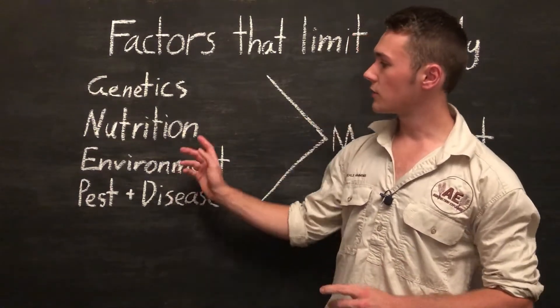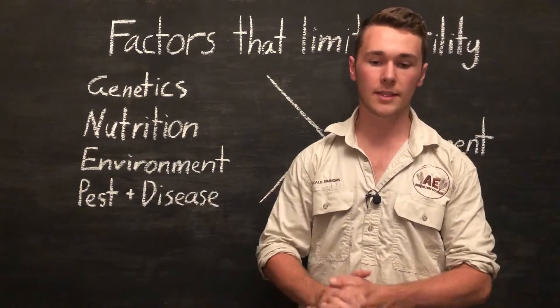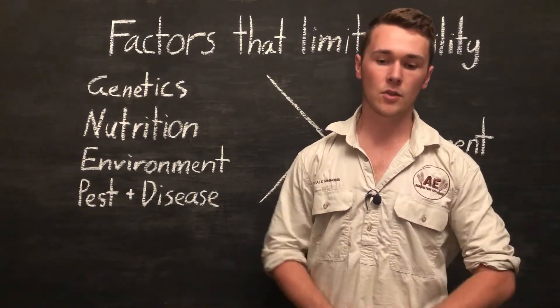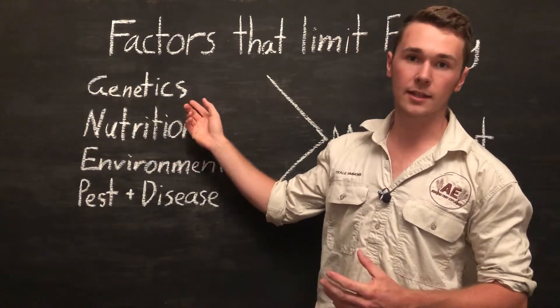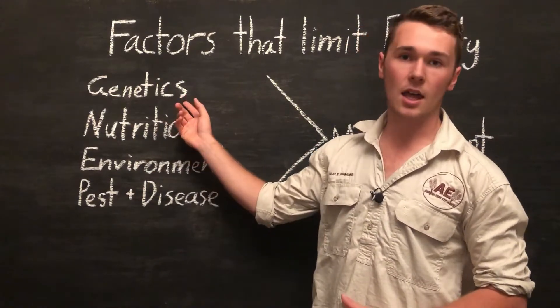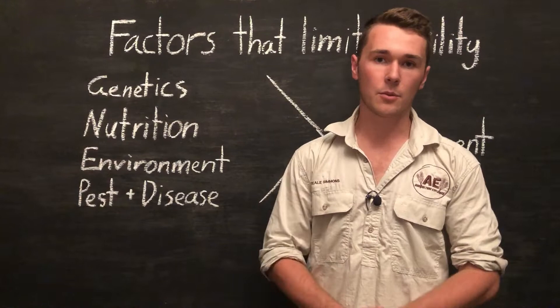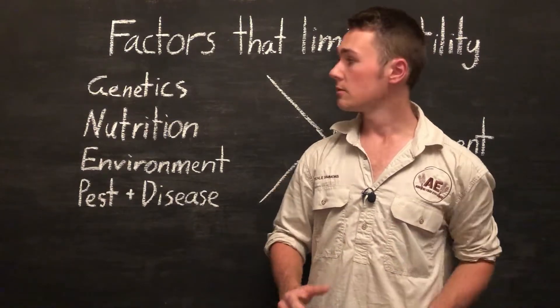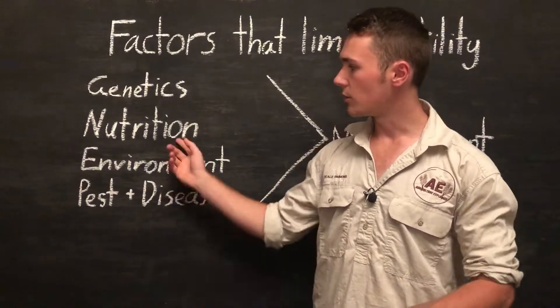So from there we should consider nutrition. Now nutrition plays a massive role in fertility. Essentially poor nutrition leads to poor fertility. And that might have nothing to do with the genetics of the animal, but everything to do with how these genetics are expressed. Because remember our phenotype or the expressions that we make are a function or a result of our genetics and our environment, which includes our nutrition.